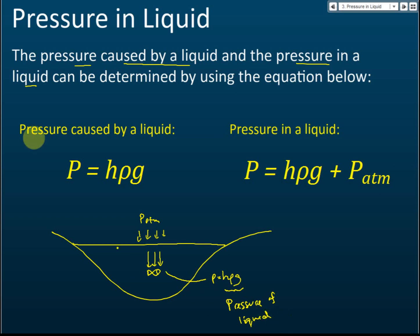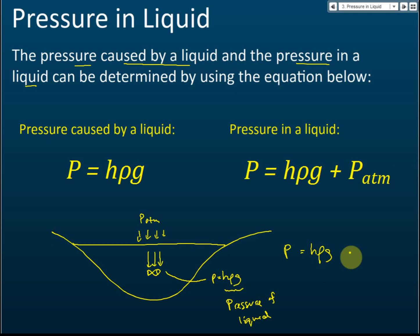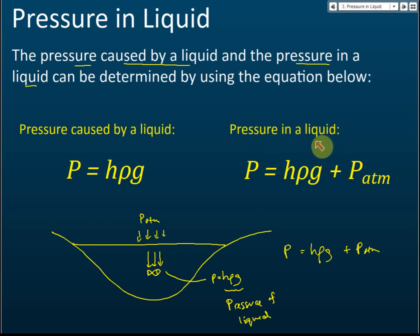Other than the pressure of the liquid, there is also atmospheric pressure. So the total pressure equals the pressure caused by the liquid plus the atmospheric pressure. Pressure caused by liquid is hρg, but the actual total pressure in the liquid is hρg + p_atm. Pressure in liquid is the total pressure experienced inside the liquid, while pressure caused by the liquid refers only to the weight of the liquid — p = hρg.